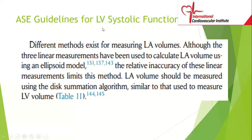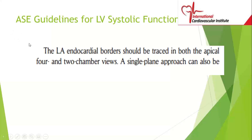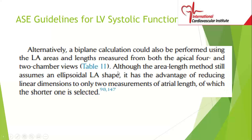This is an update from the 2005 guidelines. The area and length method still assumes an ellipsoid shape, but has the advantage of reducing linear dimensions to only two measurements. However, the correct method is the disc summation method, not the area length method. Left atrial size is also dependent on gender, though gender differences are generally accounted for when adjusting for body size.